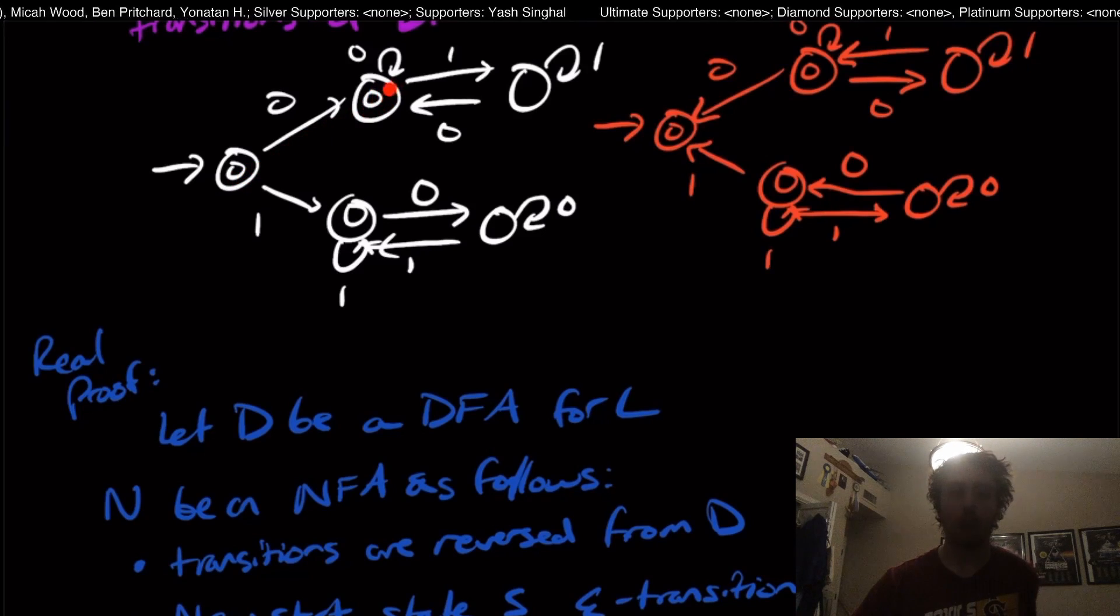I'm going to make a start state S right here. And I'm going to have an epsilon transition to all of these states, all of the previously final states.